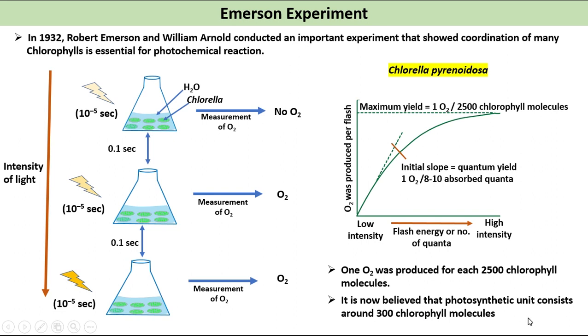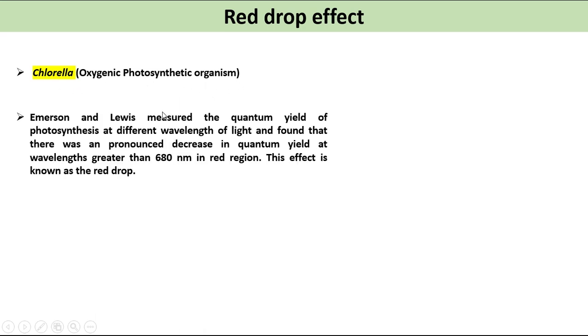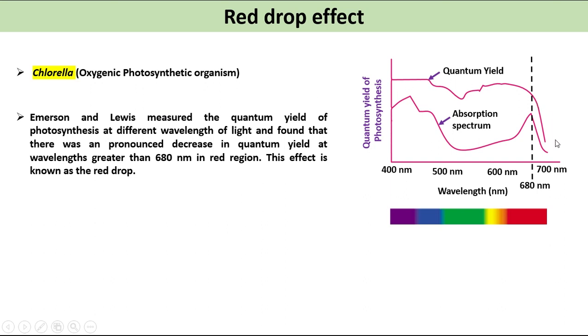Red drop effect: Chlorella, which is an oxygenic photosynthetic organism, was used in the experiment. Emerson and Lewis measured the quantum yield of photosynthesis at different wavelengths of light and found that there was a pronounced decrease in quantum yield at wavelengths greater than 680 nanometers in red region. This effect is known as the red drop.